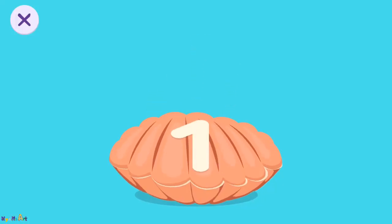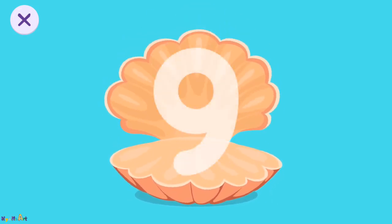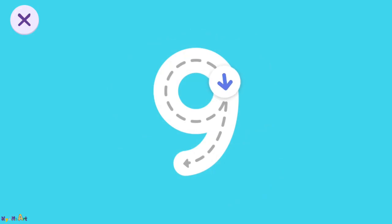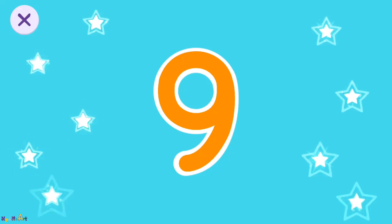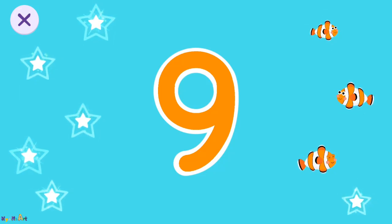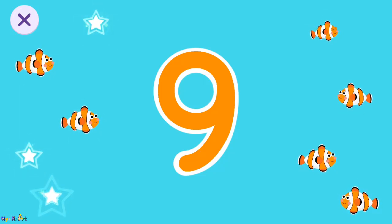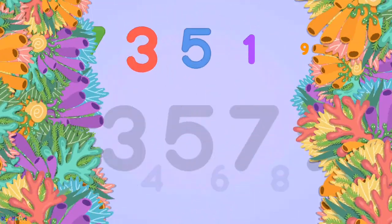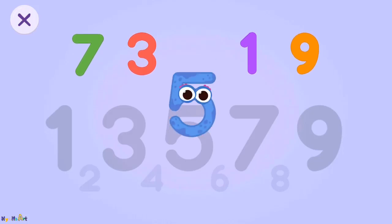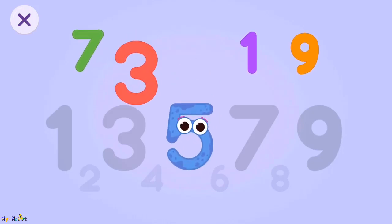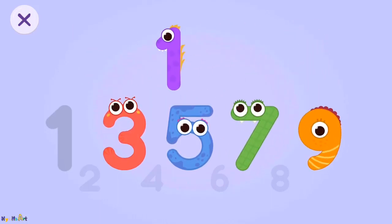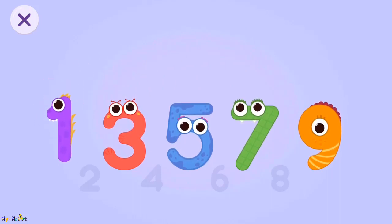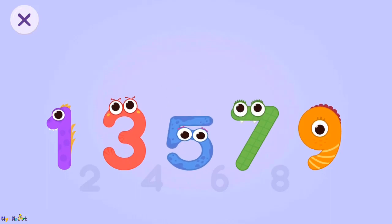One, two, three, four, five, six, seven, eight. Trace the number nine. Count the stars: one, two, three, four, five, six, seven, eight, nine. Put the numbers in order. Five, three, seven, nine. One, three, five, seven, nine.